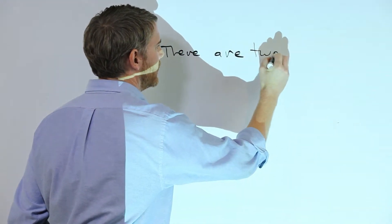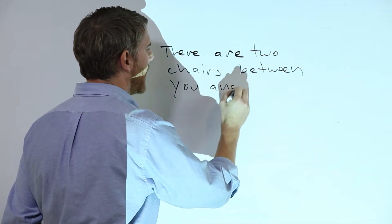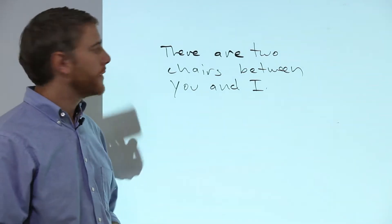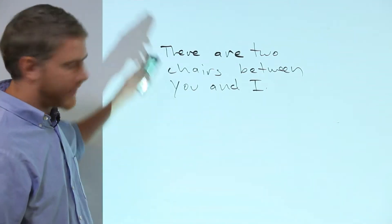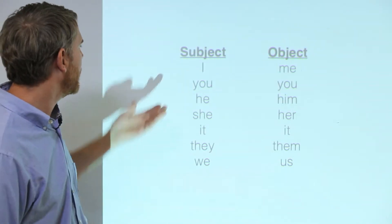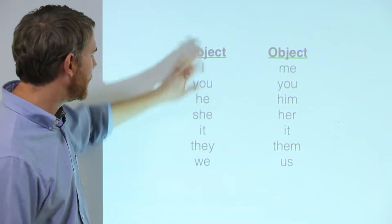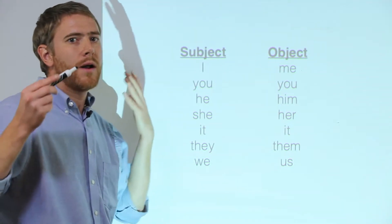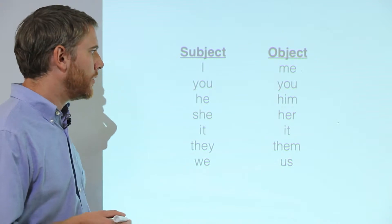Here's a common SAT error: 'There are two chairs between you and I.' This comes up a lot, where they use 'I' instead of 'me.' To check it, go back to the chart and substitute a plural pronoun. If I try 'I,' I'd say 'between they' or 'between we' — both sound wrong. So I don't want the subject side; I want the object side. That means the correct form is 'between you and me.' If it comes after a preposition, you always stay on the object side: me, you, him, her, it, them, us.